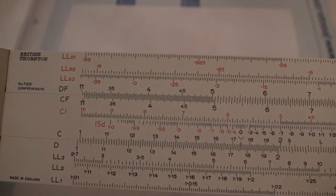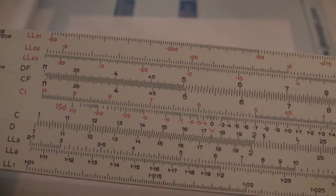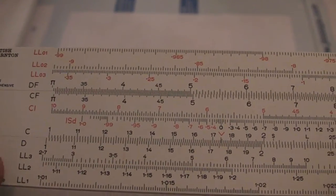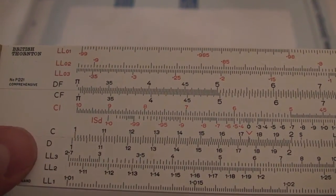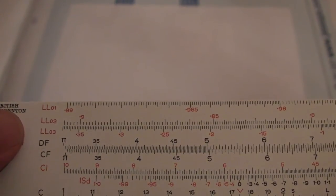Well, this is a British Thornton P221, and it's got - I'm afraid I don't even know the names of the scales, but you can see on the left here LL1, LL2, LL3, and then up here O2, O1 and O3.